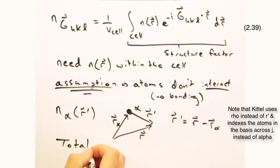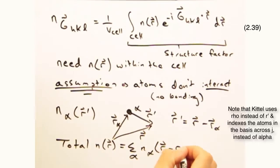And like before, we can state that our total n(r) is the sum of all of these n_alphas over all the atoms in the unit cell.